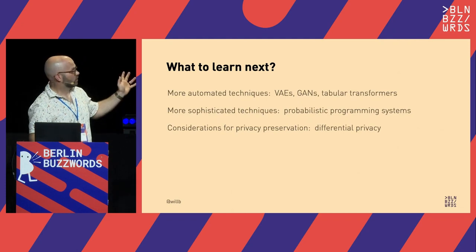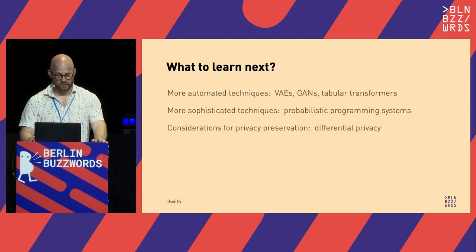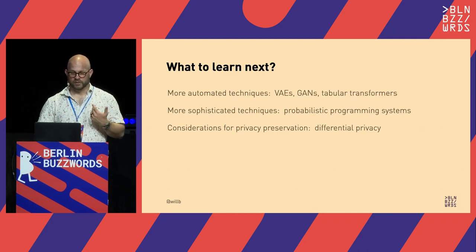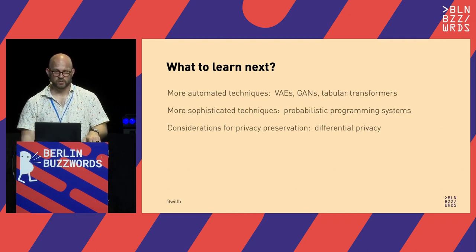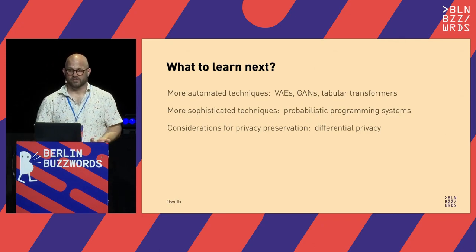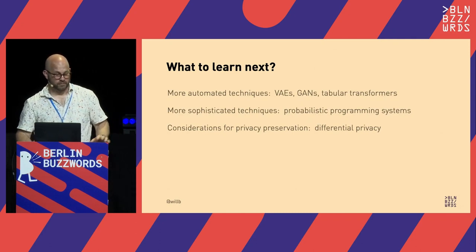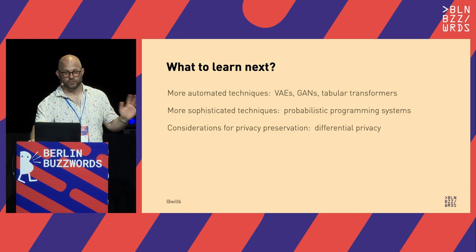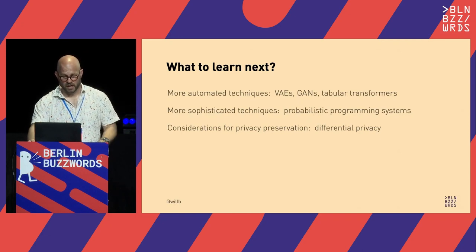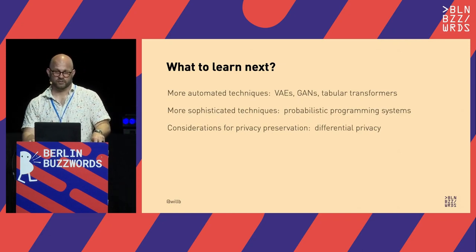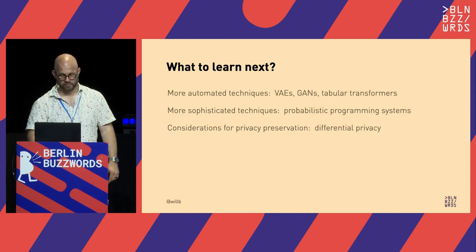There's a lot of work on automated machine learning techniques for generating synthetic tabular data. Variational autoencoders model feature spaces as approximate probability distributions — they're quick to train and can produce plausible results. Generative adversarial networks can produce very good tabular data, but they're trickier and more expensive to train. If you're working with time series, look at transformer models, and specifically the TabFormer open source project from IBM.